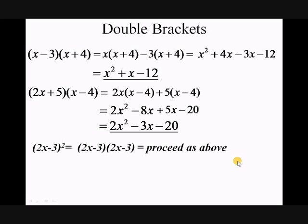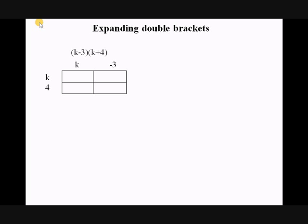Look at this example: (k minus 3) times (k plus 4). What I've done here is taken the first bracket and put it as k and minus 3, and the second bracket as k and 4. I've left the plus sign off the 4 because wherever we use a plus we can leave it out. I've built a multiplication grid. The first thing I do is multiply the k's together to get plus k squared, then multiply the k by the minus 3.